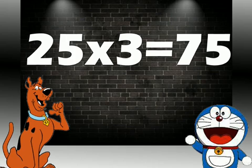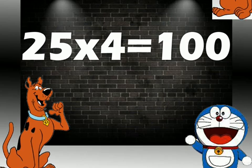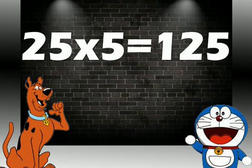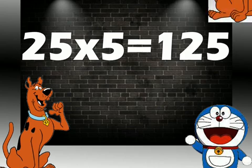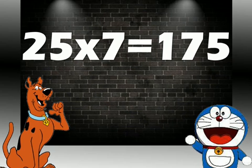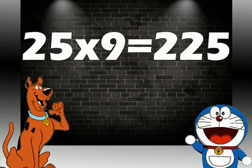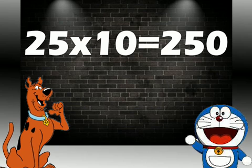25 ones are 25. 25 twos are 50. 25 threes are 75. 25 fours are 100. 25 fives are 125. 25 sixes are 150. 25 sevens are 175. 25 eights are 200. 25 nines are 225. 25 tens are 250.